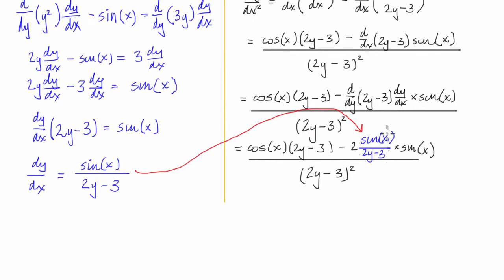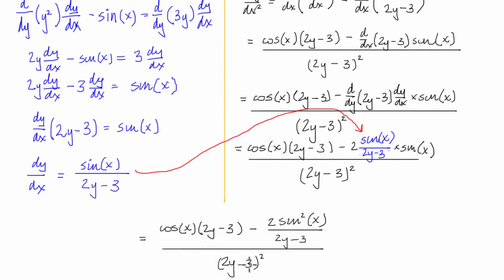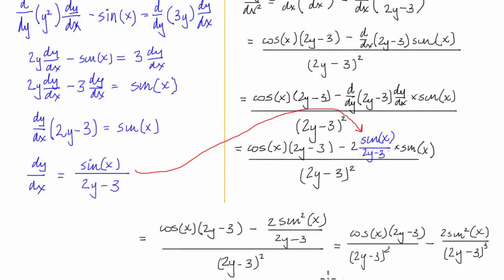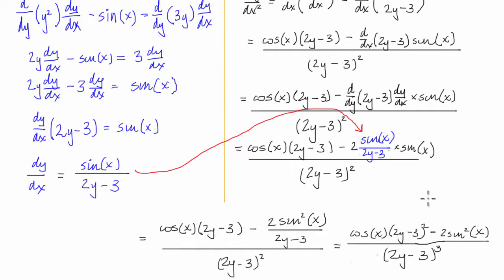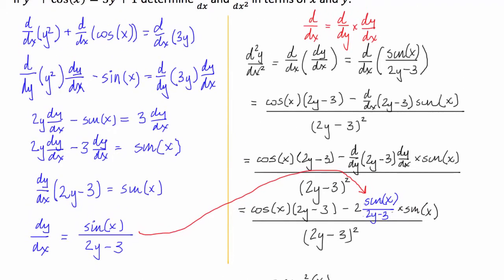I'm going to simplify the back half of this. We can break the fraction into two parts with (2y minus 3) squared in the denominator. If asked to leave it as a single fraction, I'll make them both (2y minus 3) cubed and multiply the first term by another (2y minus 3). There's a fair bit of algebra involved and a lot of places you can go wrong with this problem.